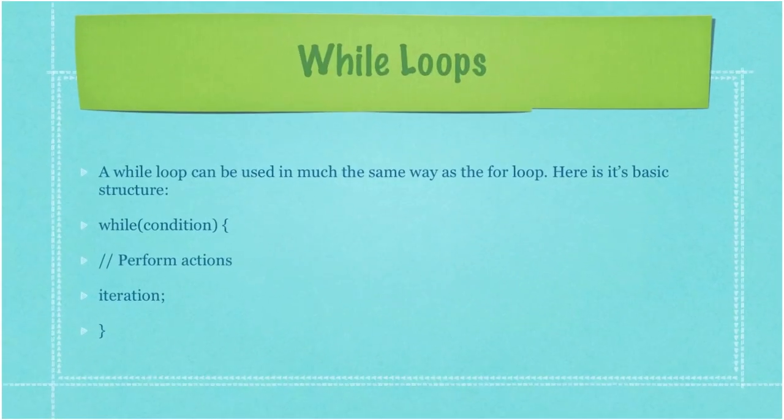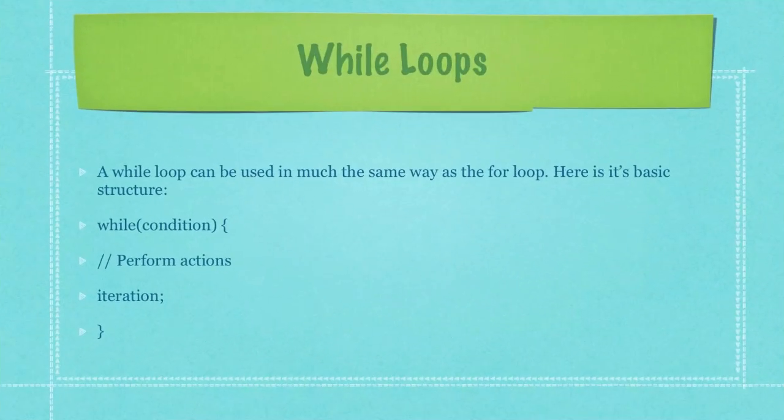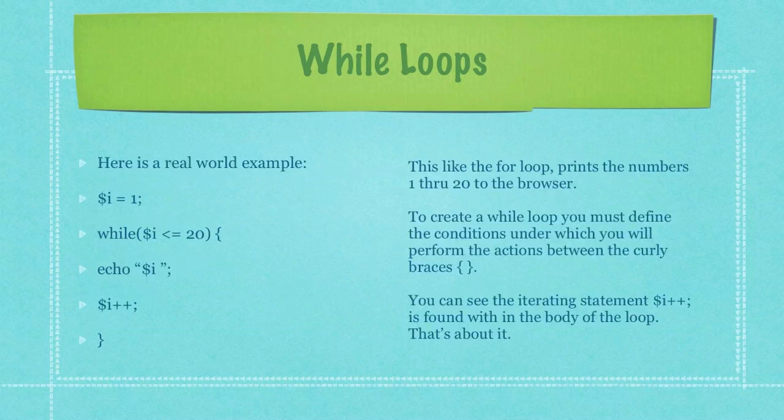A while loop can be used in much the same way as the for loop. Here is its basic structure. This, like the for loop, prints the numbers 1 through 20 to the browser.